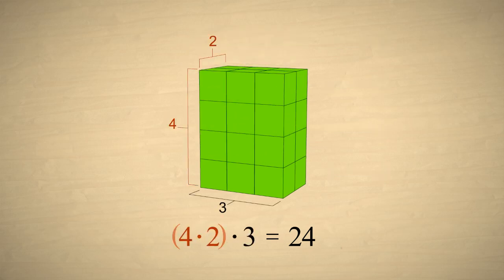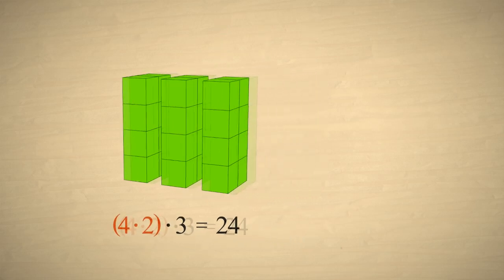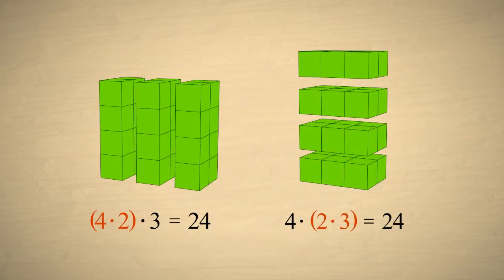Or we can group the 4 and the 2 to get three groups of 8, which is still 24. Either way we group the numbers, we still get the same result.